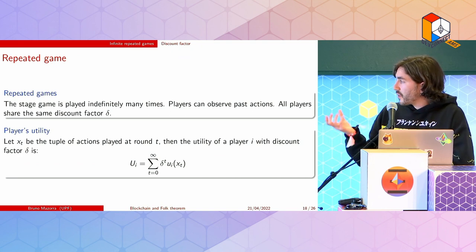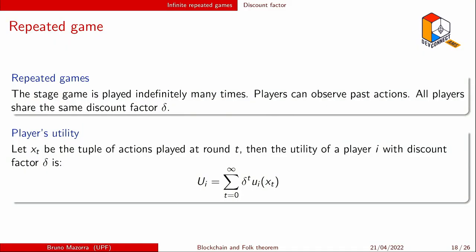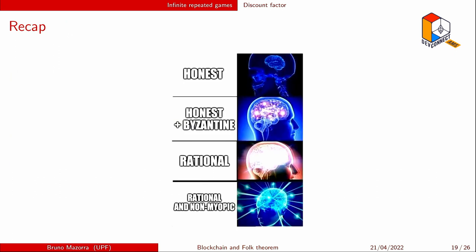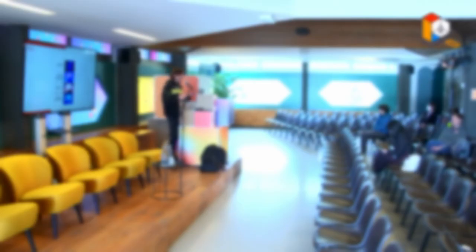Now we have a repeated game. Take the game we were playing before — pick one — and assume they play it indefinitely. Players can observe past actions of other players, all players share the same discount factor delta, and each player's utility is the sum of all revenue obtained per round multiplied by this discount factor.